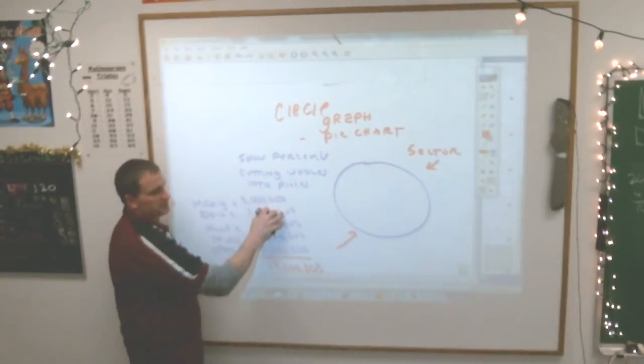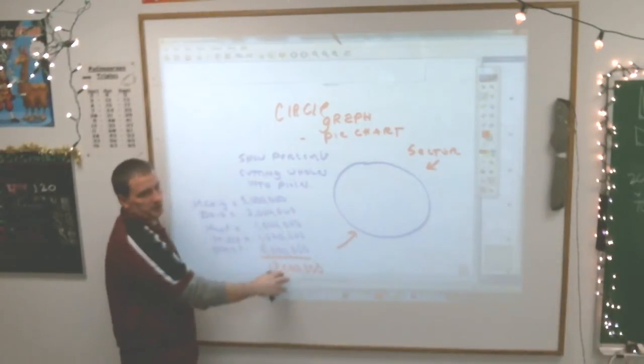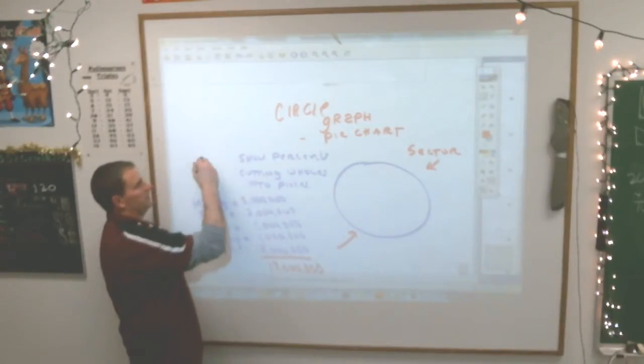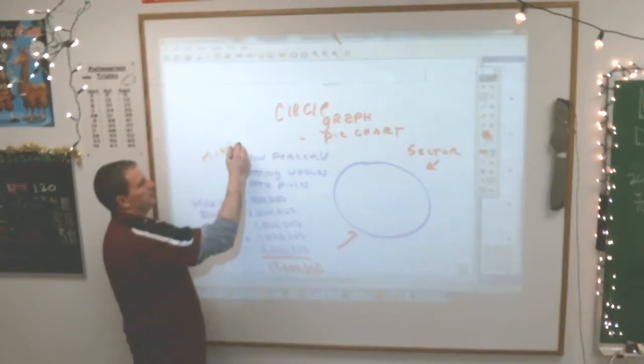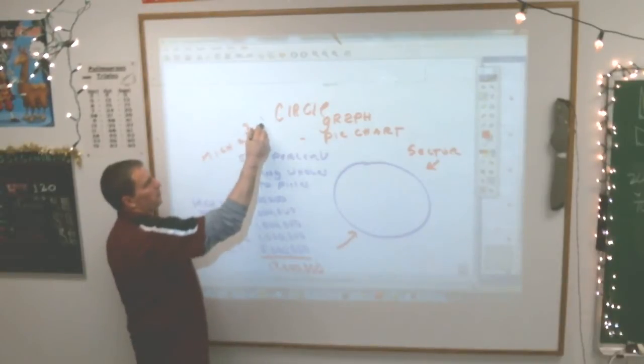So what fraction is Michigan responsible for? Three million out of twelve million. That reduces them too very easily. By the way, since these all end with six zeros, you could get rid of all the zeros completely. It would be the same as three over twelve. Michigan is one fourth.